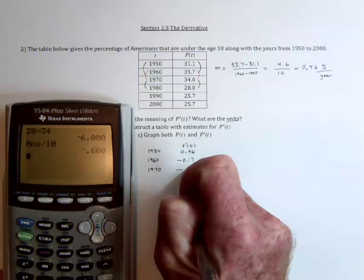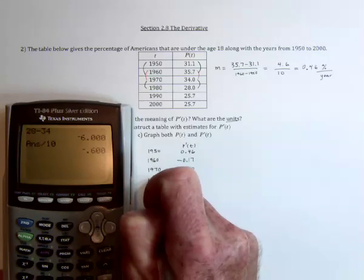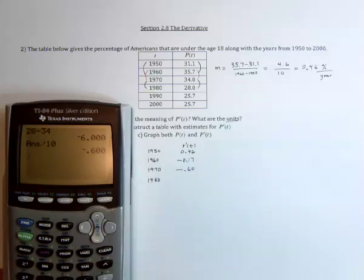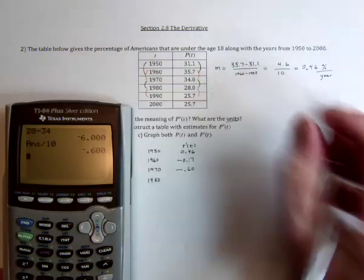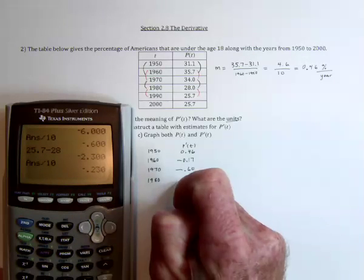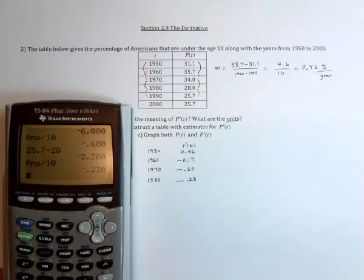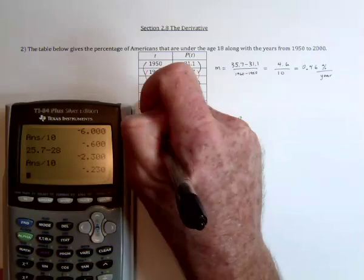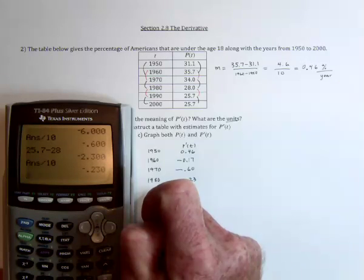So then it dropped by 0.6% per year. The 1980s would be 25.7 minus 28.0, or an average drop of 0.23% per year. And we've almost got it. And then throughout the 1990s, it's 0. Don't even need a calculator.